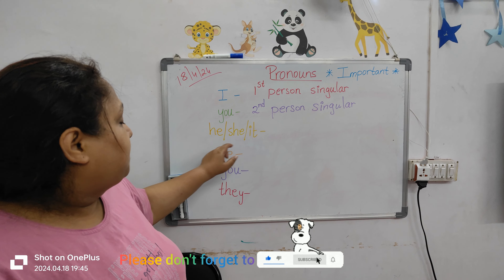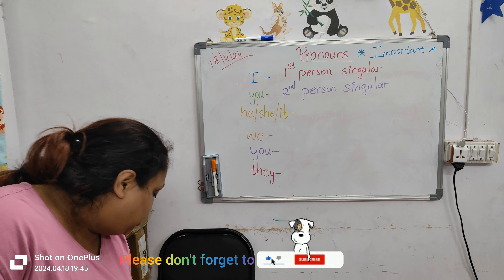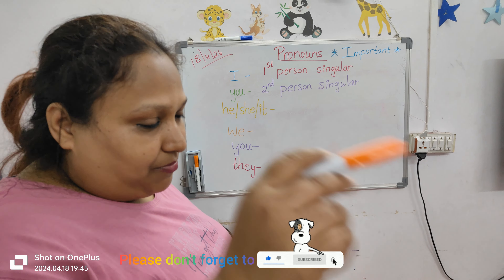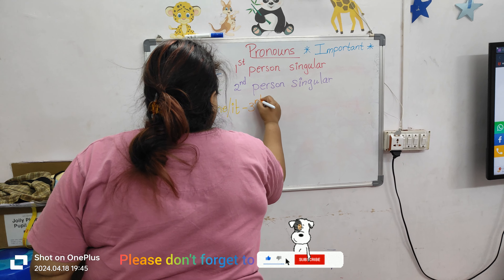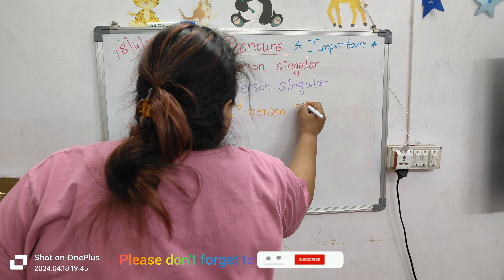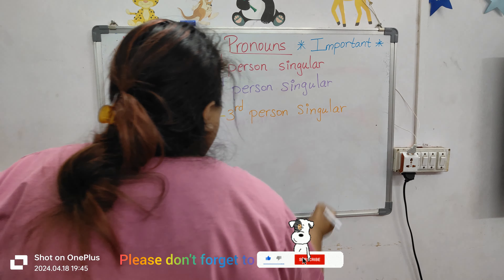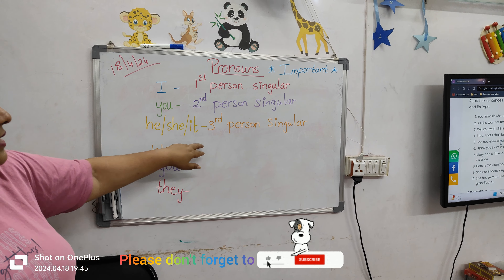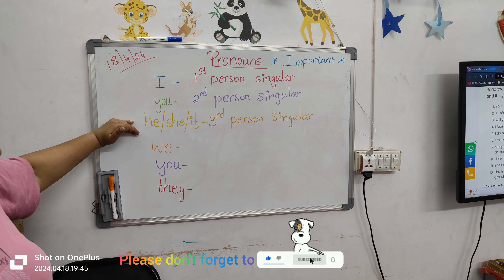So 'it' is third person singular. How many people are involved in the conversation? Three — that is I, one more person, and one more person we are talking about. So this will be third person singular. These three — 'he', 'she', 'it' — are singular.